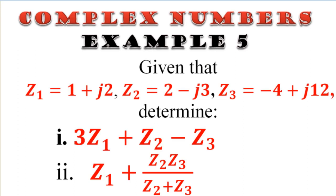Given that Z1 equals 1 plus j2, Z2 is 2 minus j3, and Z3 is negative 4 plus j12. Determine: Roman numeral 1 — 3Z1 plus Z2 minus Z3; and Roman numeral 2 — Z1 plus Z2·Z3 over Z2 plus Z3.